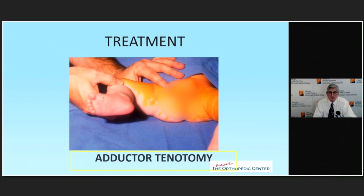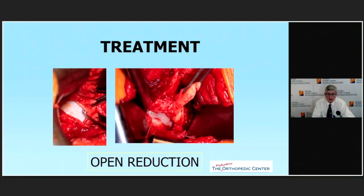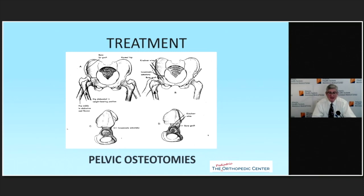If the Pavlik harness is not successful, an adductor tenotomy can provide a larger safe zone, followed by spica casting. If obstruction persists — such as an inverted labrum or ligamentum teres — an open reduction is performed to remove the obstruction and seat the femoral head in the acetabulum. Beyond that, there is a range of pelvic osteotomies to reconstruct the hips and achieve anatomic correction.